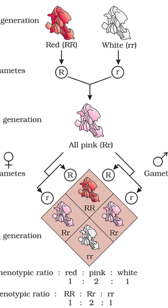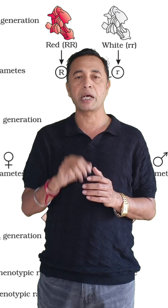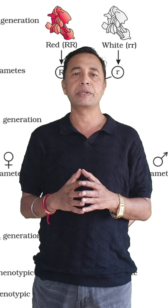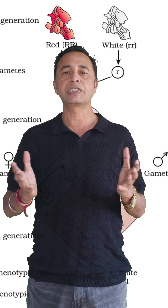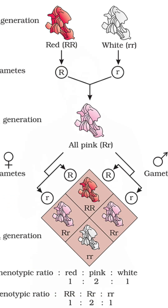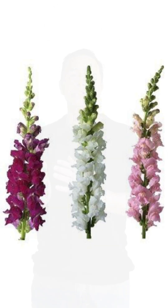According to Mendelian law, in the heterozygous condition — that is, capital R and small r in the F1 generation — it should be red. But here it is not red; instead, it is pink in color. That is because the dominant gene is not expressing itself completely, and because of that, the partial trait of the recessive is expressed, resulting in a blending into an intermediate trait.